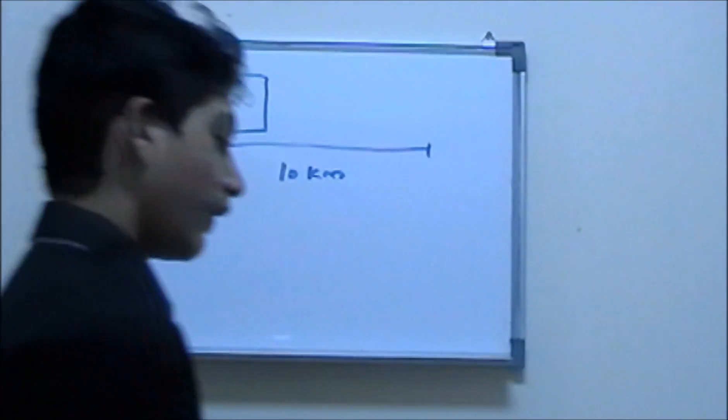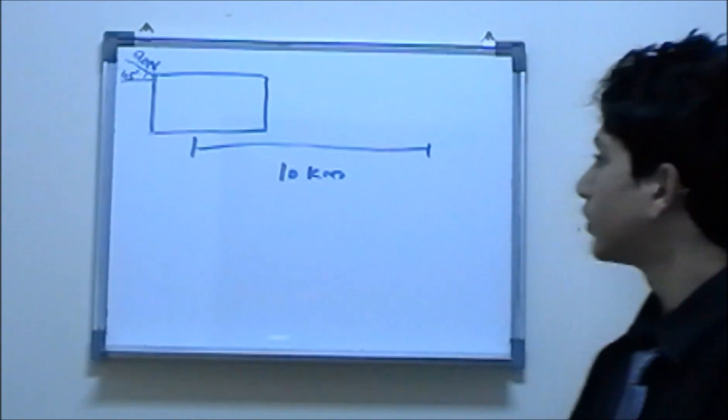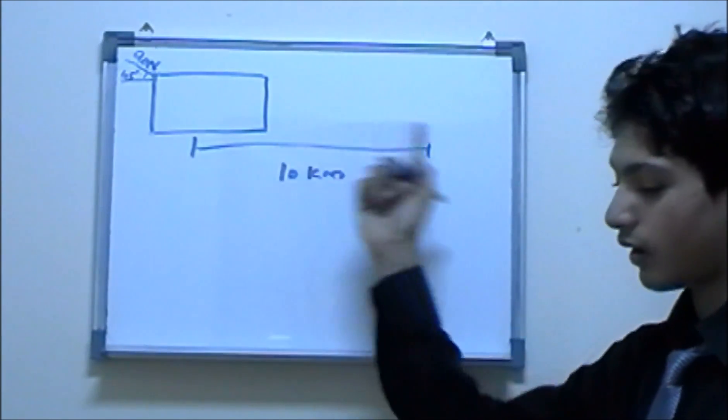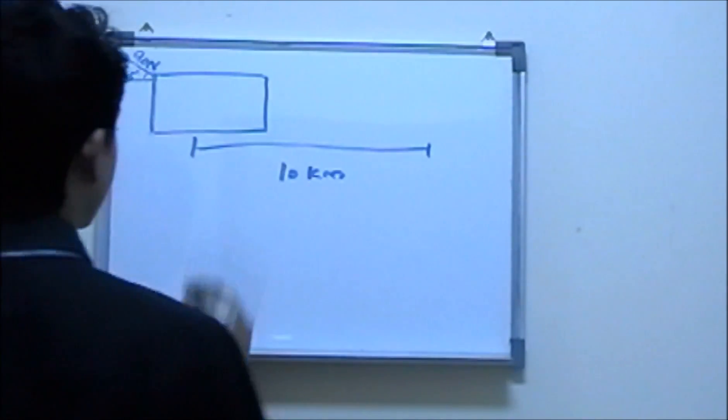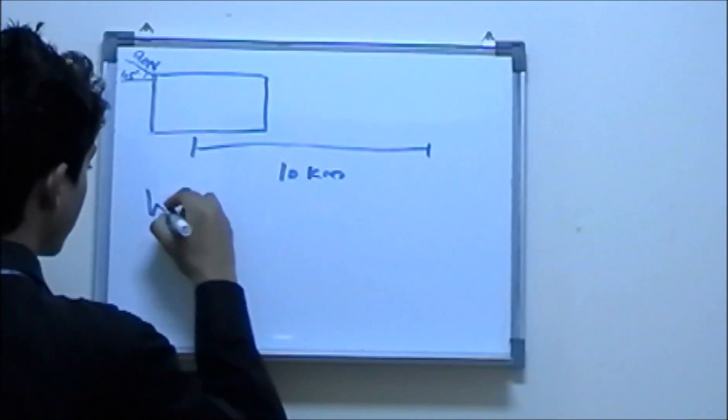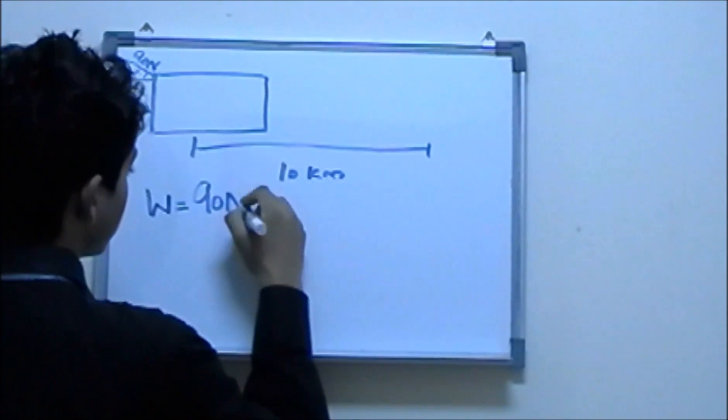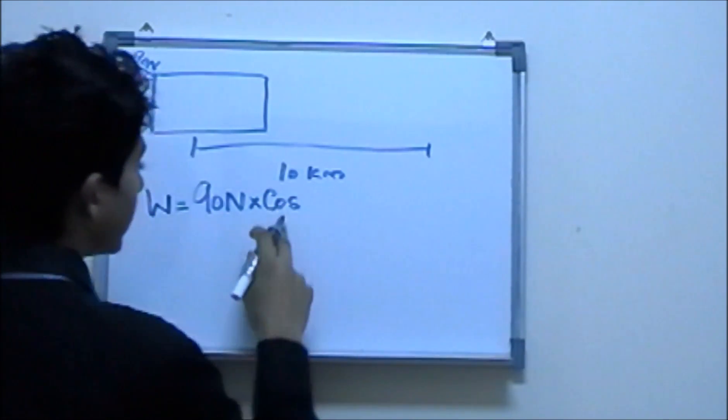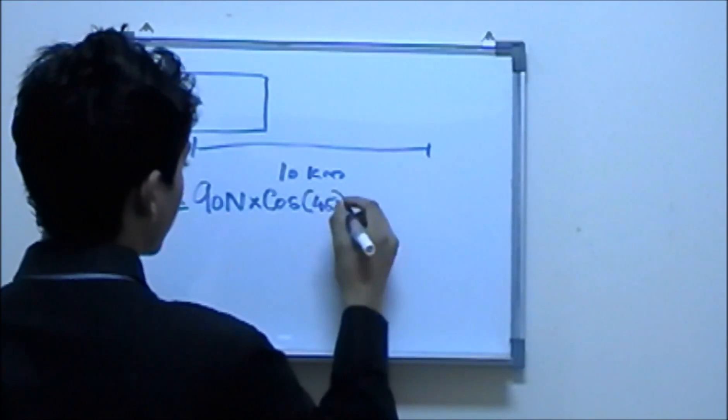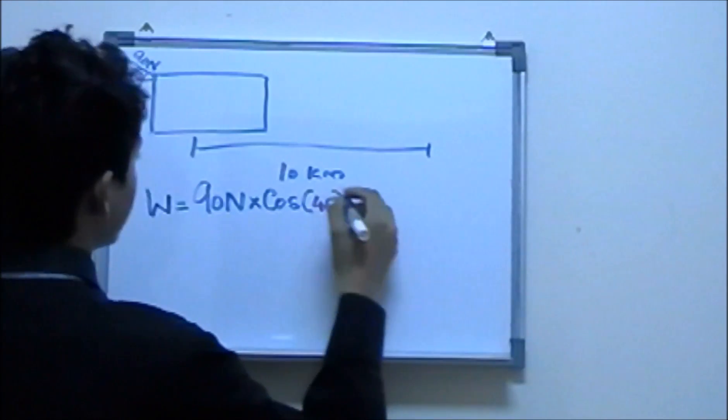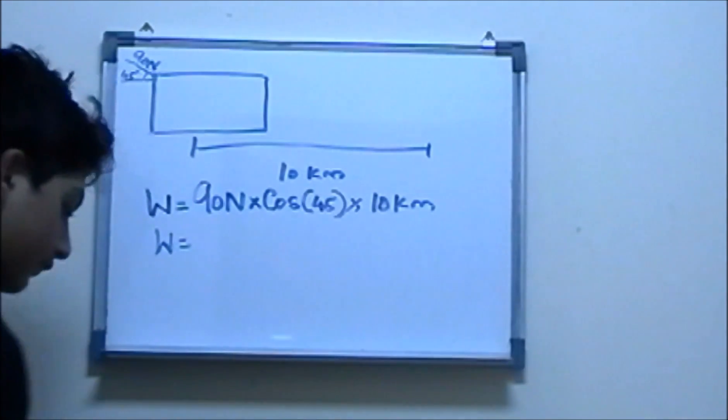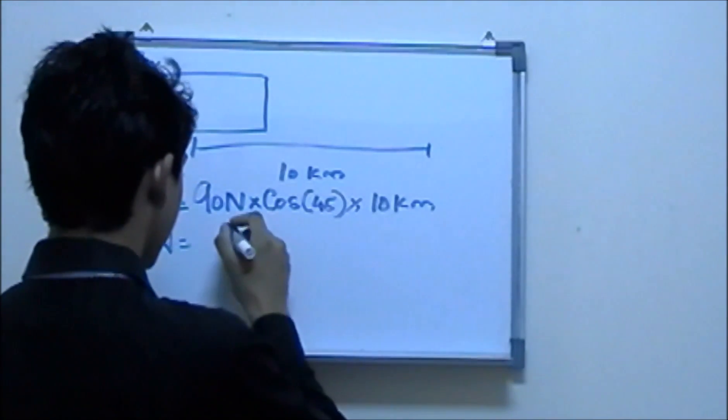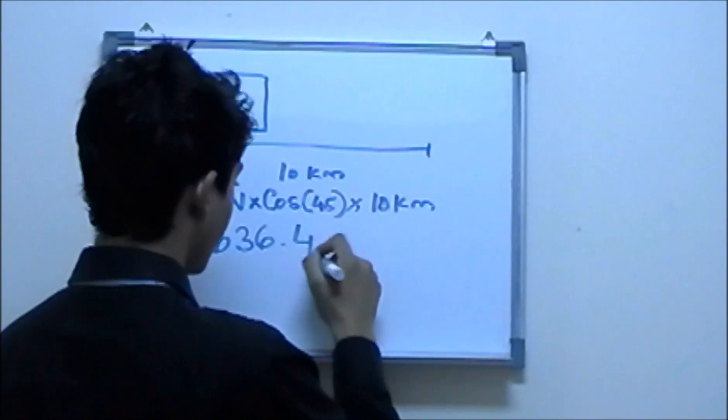We know that work is equal to force times distance. But here the force isn't acting on the object's motion. It's acting vertically, so part of the force is being applied. So what we do is use work is equal to force times cosine of theta times distance. Work is equal to force which is 90 newtons times cosine of 45, times the distance which is 10 kilometers. When you find the work, you should be getting 636.4 joules.